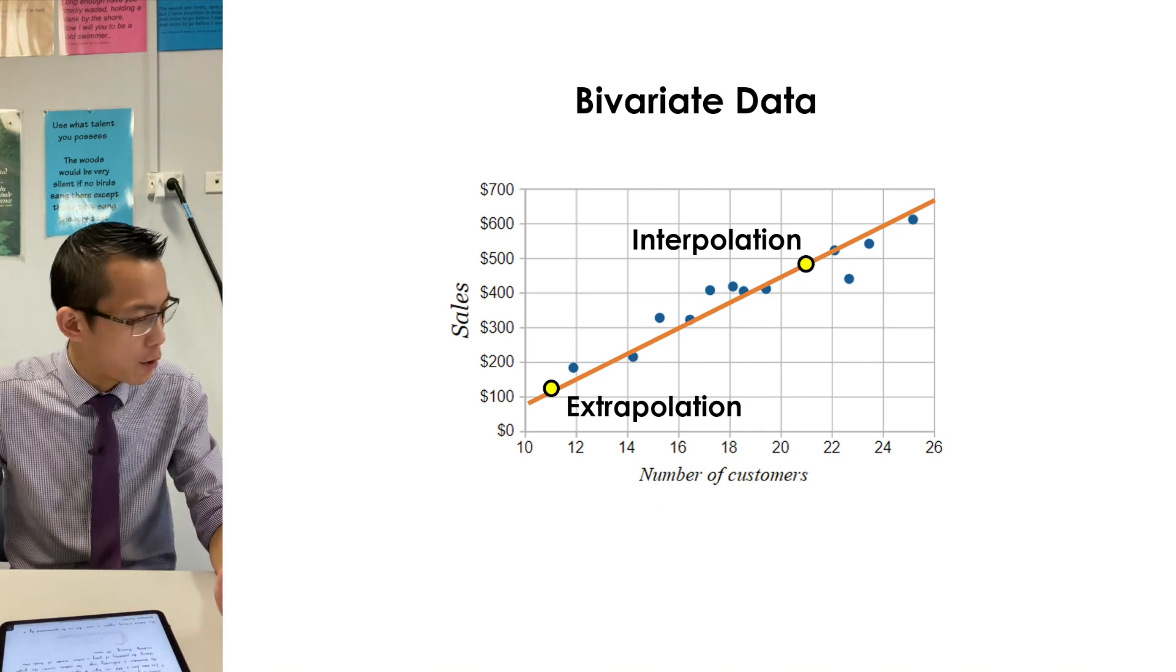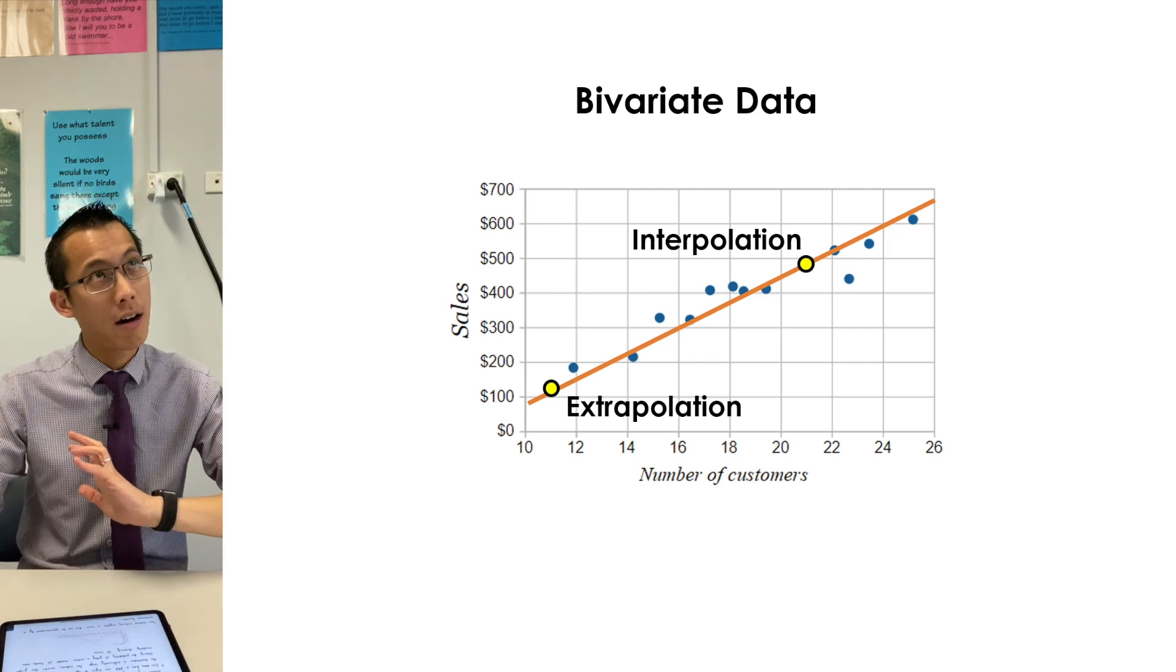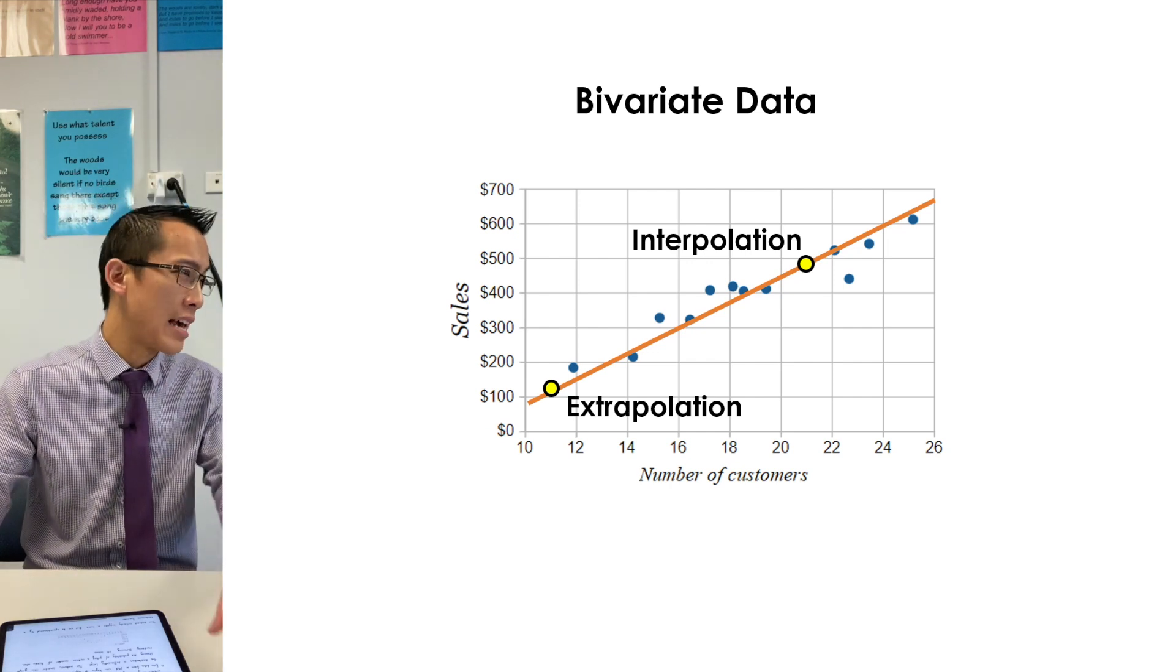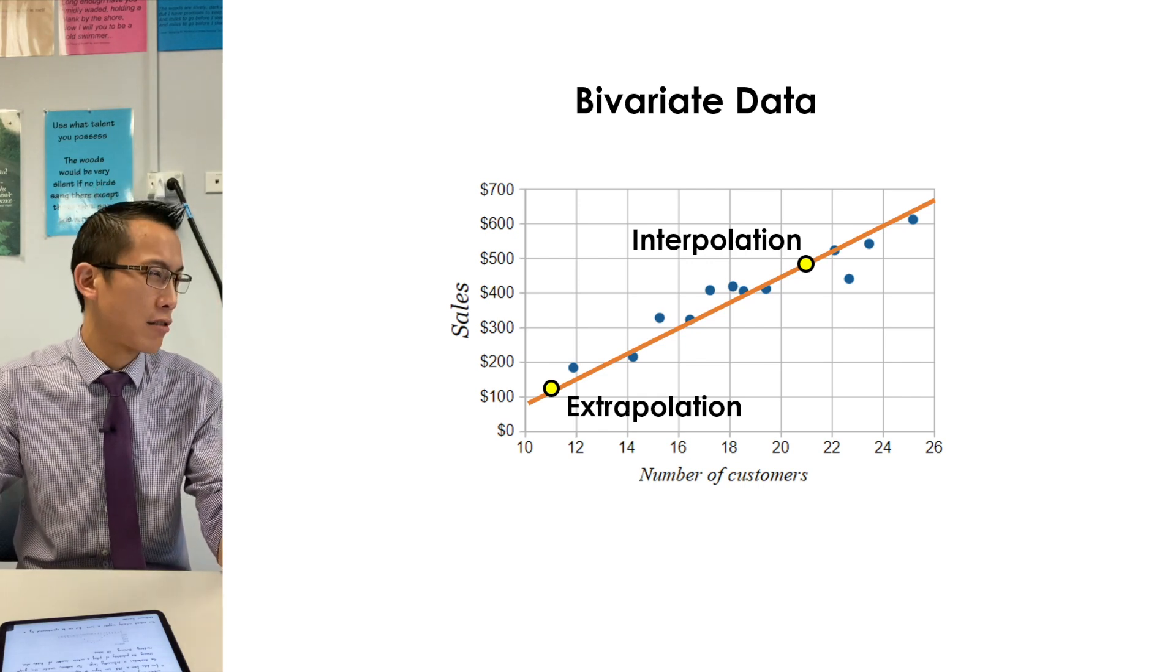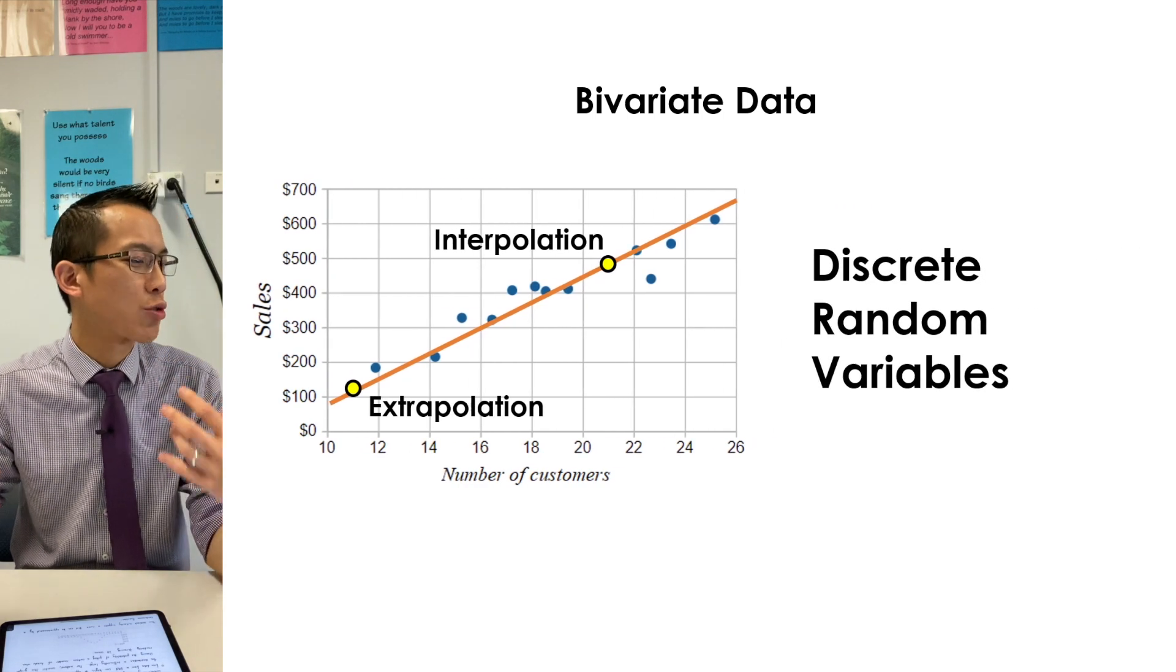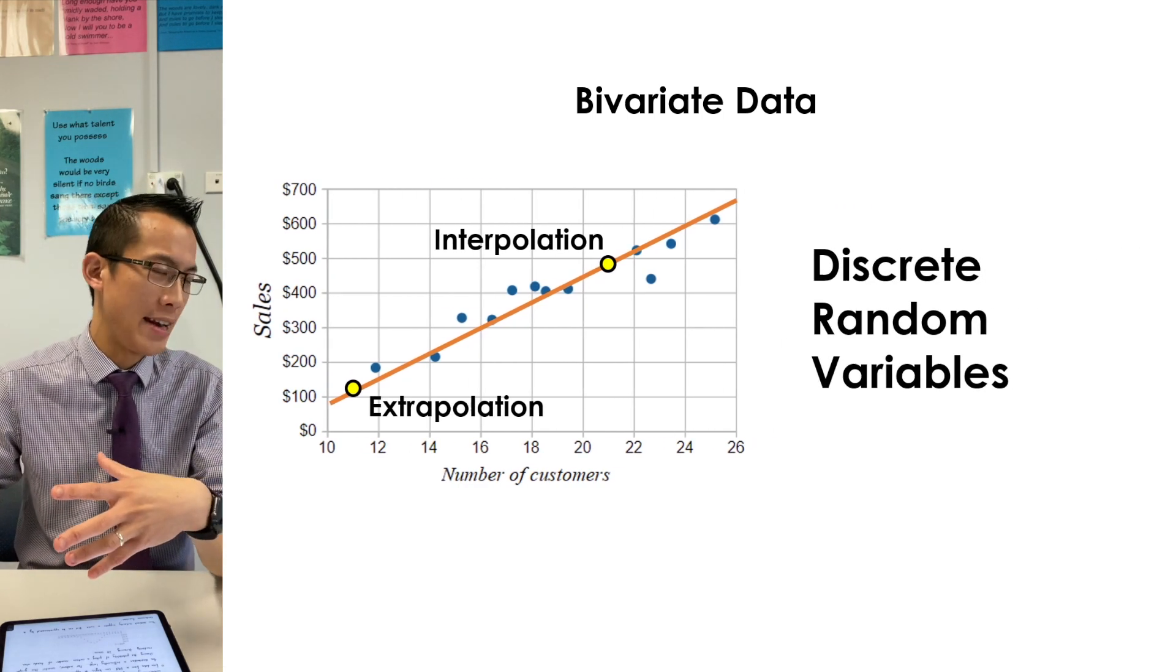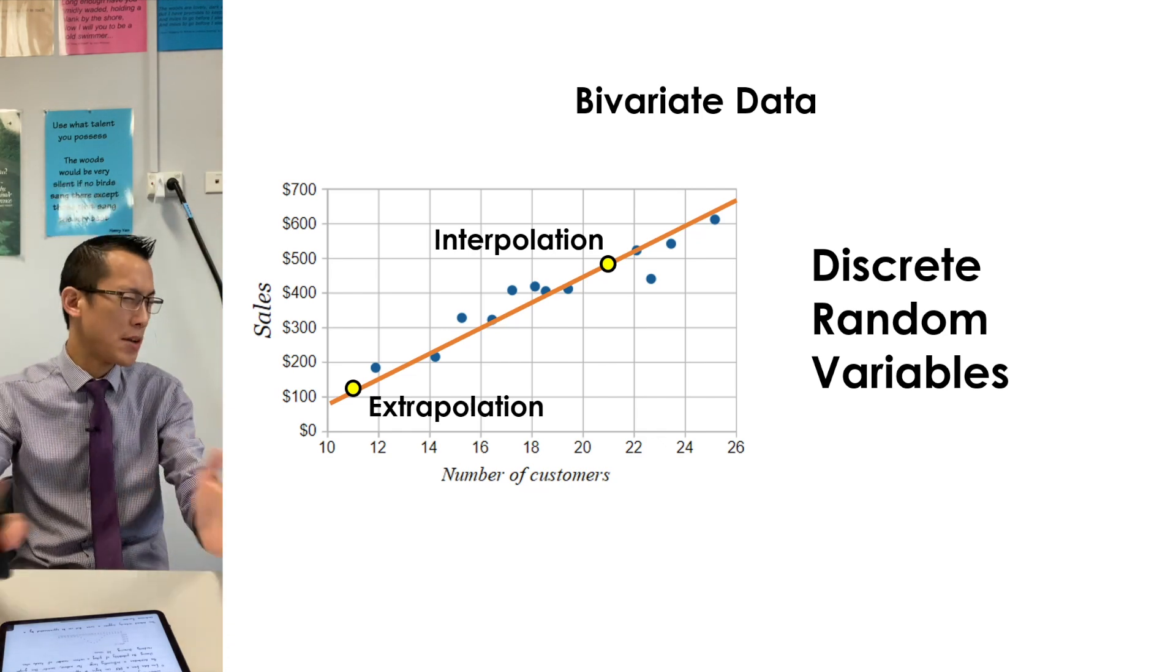And what that line of best fit or the trend line lets you do is sort of guess at where you have gaps in your data. So do you guys recall what's it like when you try and make a prediction about some unknown data point, but as you can see for this one, it's within your data set. Yeah, this one's called interpolation because it's in the data set. Whereas if I gave you a point out here and said, well, my line of best fit predicts that if you had 11 customers, this is what would happen. I don't actually have a data point there. So this is outside of our data set. And that's why we called it extrapolation.